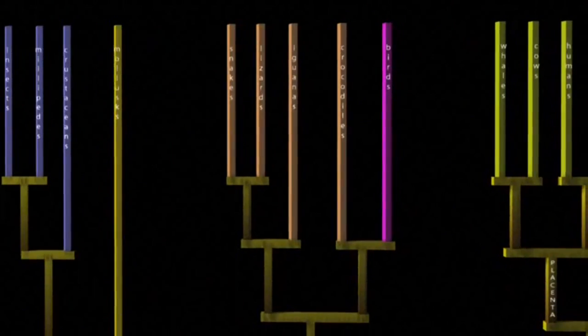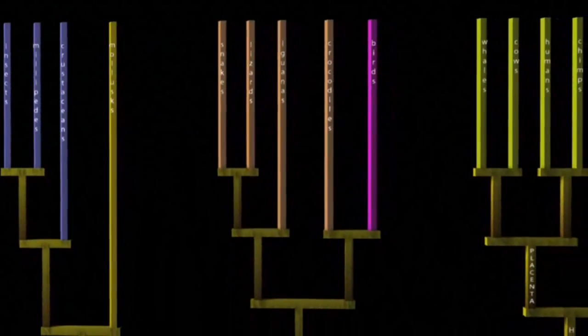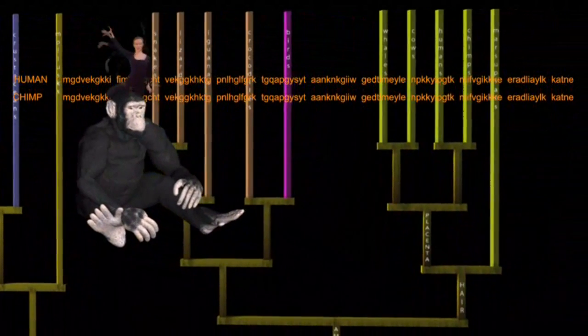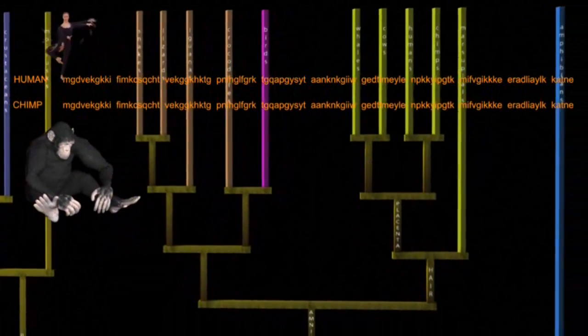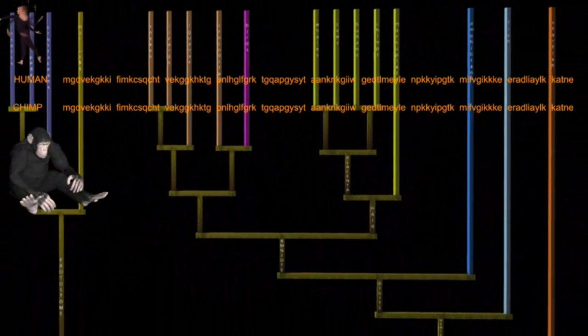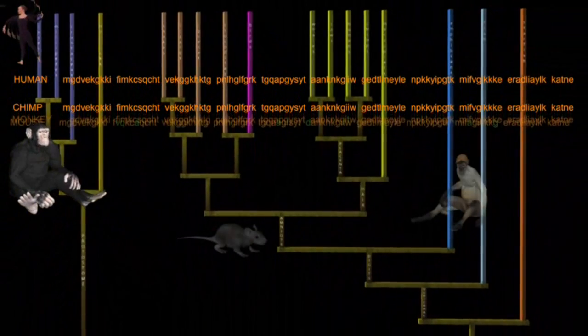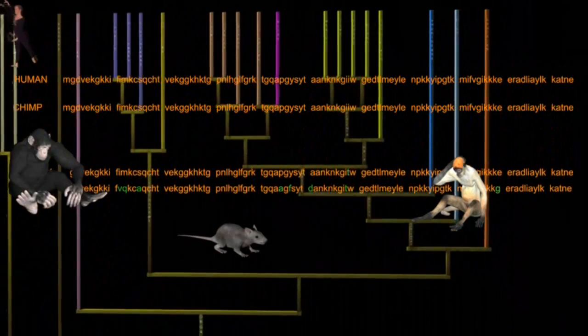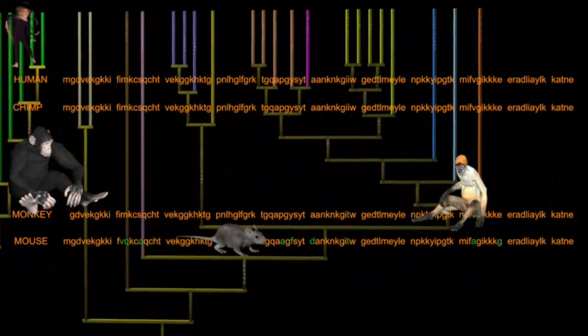But these mutations do tell the genealogy of the owners. For example, humans and chimps have exactly the same amino acid sequence for this protein. It has not mutated in the 6 or 7 million years since our lines separated. And our common gene is at most 10 amino acids different from all other mammals, confirming our close relationship with other mammals.